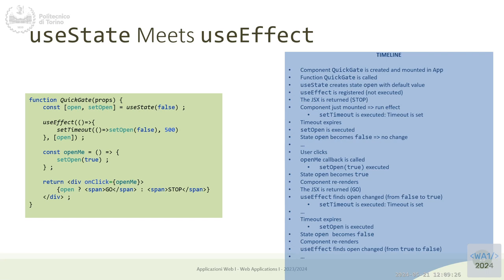So the component is created and mounted. We call the function and return 'stop'. Then, since the component is created for the first time, the effects are executed. Executing the effect sets a setTimeout. At this point, the component rendering is finished — render phase produces 'stop', and in the update phase, we set a timeout. Setting a timeout is a possible side effect — something external to the application. After 500 milliseconds, outside the control of React, the timeout will fire.